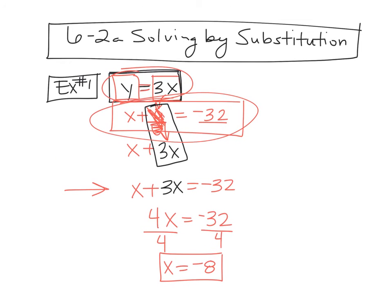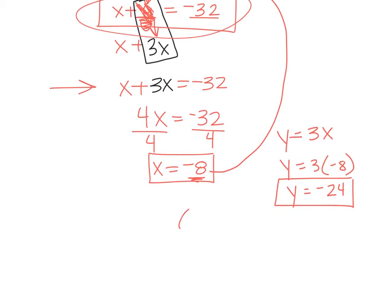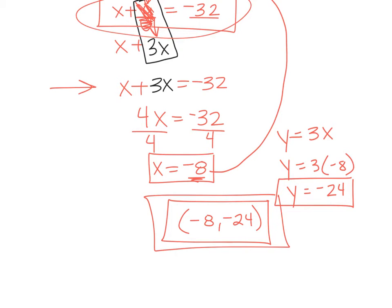So what you're going to do is you're going to go back up to your original equation and you're going to plug it in to solve for the Y. So if Y equals 3X and X is negative 8, then I can say Y equals 3 times negative 8. So Y is negative 24. That means my answer is negative 8, negative 24. That is substitution. You're solving for a variable and then you're substituting what that variable equals and then solving for X and solving for Y.